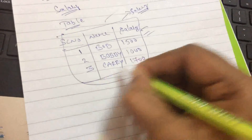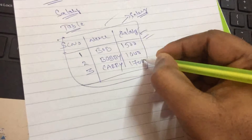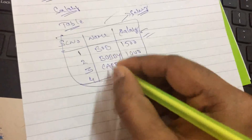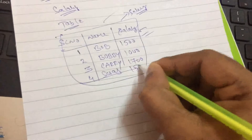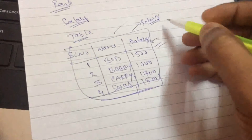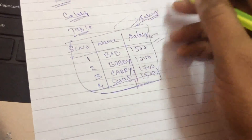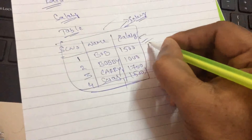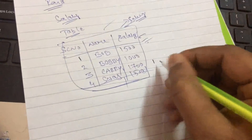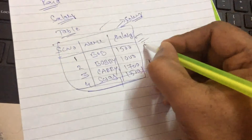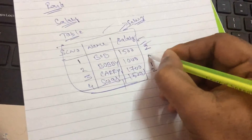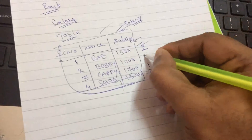But if you have a record with the same salary — for example, record number four also has salary 1500 — now when you apply RANK on the salary column, it gives rank 1 for 1700, rank 2 for 1500, and again rank 2 for the other 1500 since it is the same salary.